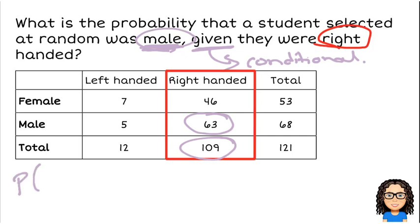So I would write that and say probability of being male given - that straight line up and down means given or conditional upon them being right-handed. And that probability is 63 out of 109.